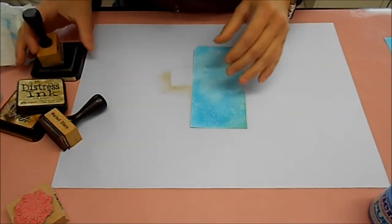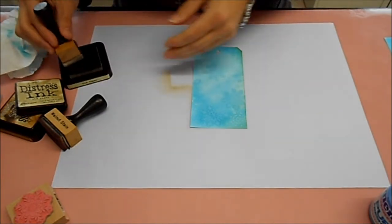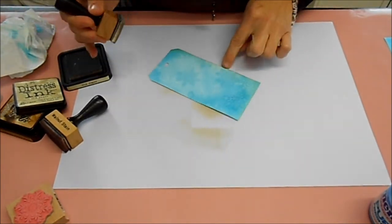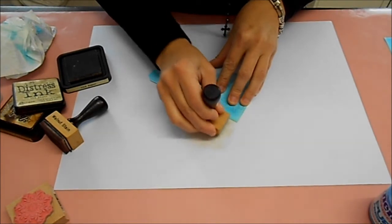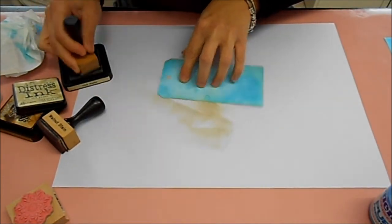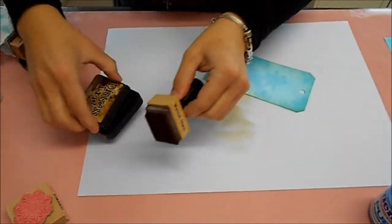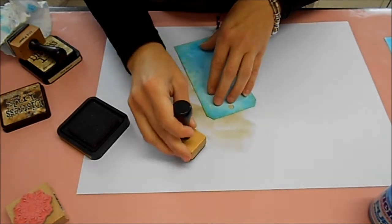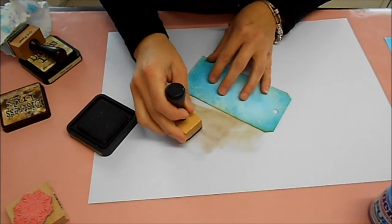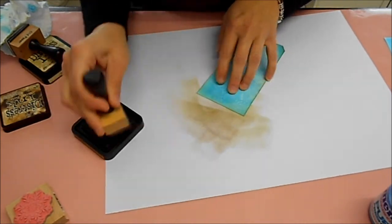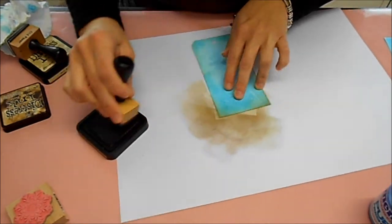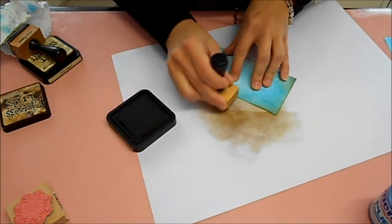Right now I'm going to ink the edges with some Distress ink. As you can see you can use Distress with Copics too. I'm going to use Walnut Stain also a little bit. That gives it an older look. And if you do it a little bit more on the edges, it will look like a vintage old tag.